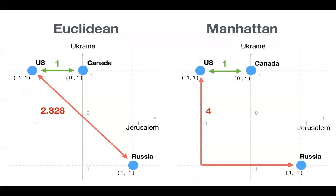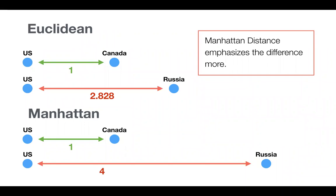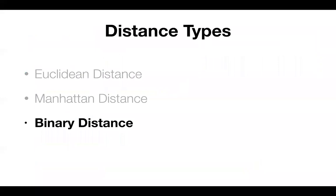It's not about which one is better — it depends on how you want to emphasize the differences. If you want to emphasize differences more, you might want to go with Manhattan. Euclidean distance is very commonly used, so if you get confused, start with Euclidean first. That's the algorithm we're going to use today.